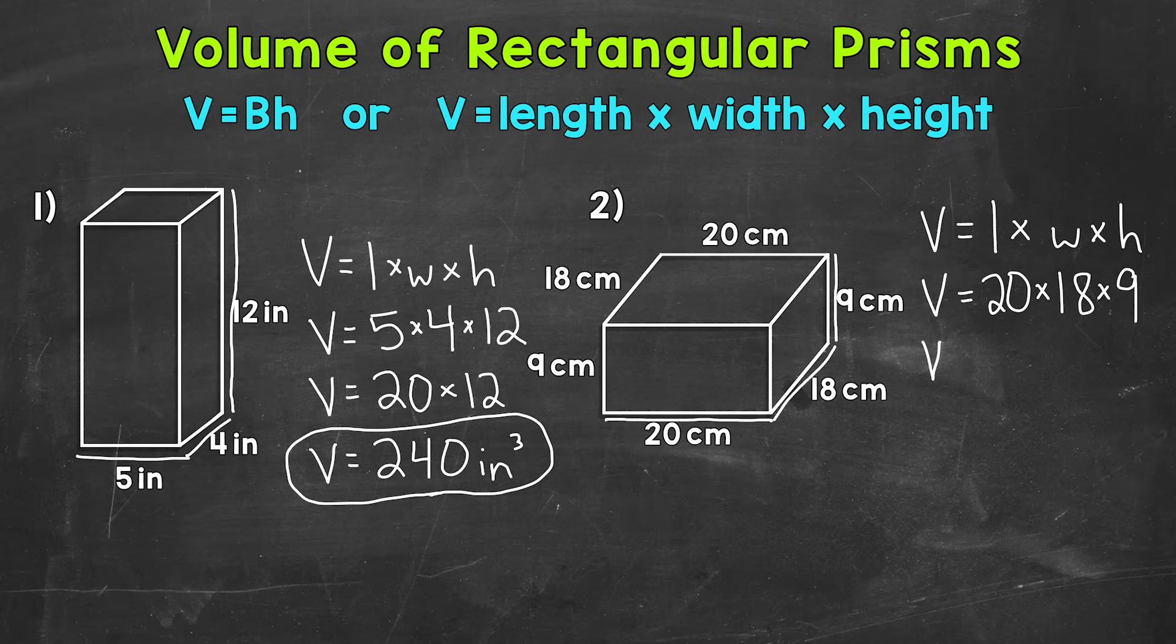So now let's do one step at a time here. 20 times 18, that's going to give us 360. And then we can multiply that by our height of 9. So the area of the base is 360. And then multiply that by 9 to get our final volume. And that's going to be 3240, and we are working with cubic centimeters.